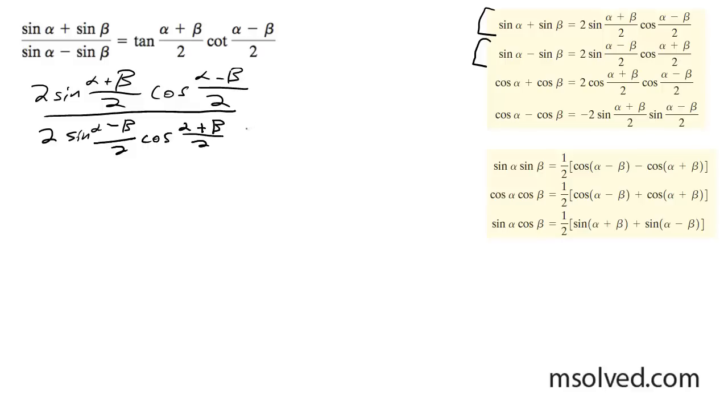Right here, these two 2's cancel out. What we have is these two terms line up for the cotangent, and these two terms line up for the tangent.